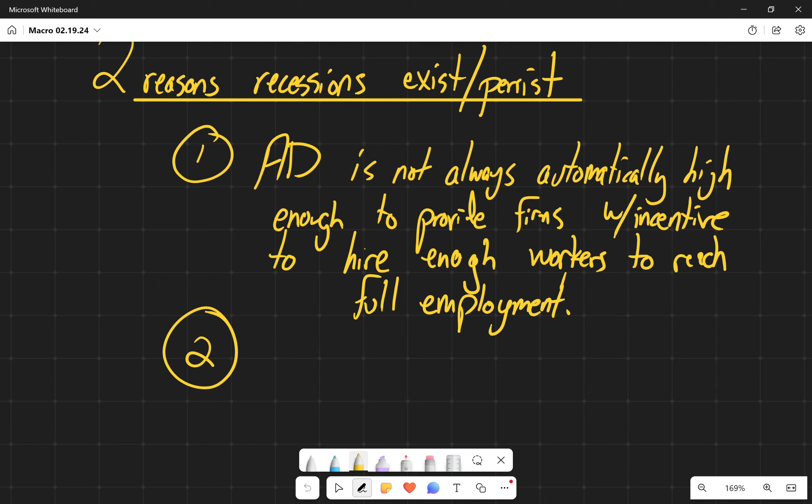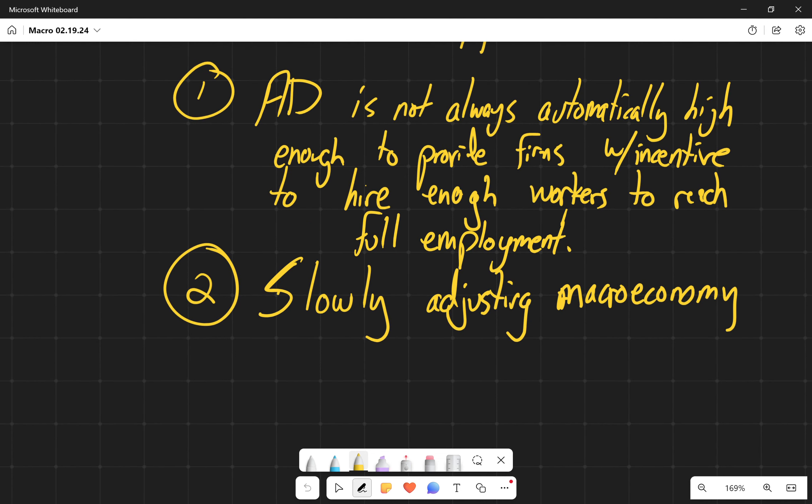So the second reason that Keynes thought that recessions existed and persisted were because of a slowly adjusting macroeconomy. He's not denying that the macroeconomy does adjust, right? But it's the fact that it's slow, and if it's severe enough in the long run, we'll be dead.